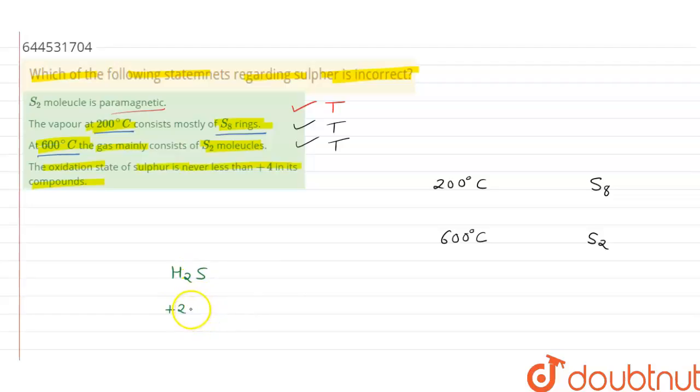plus two for hydrogen, then we assume x for S, then it equals zero. So x would be minus two. That means in the H2S molecule, the oxidation state of sulfur is minus two. Clearly, this is an example that sulfur can exist in minus two oxidation state. This makes the fourth statement false. So we can say that the fourth statement is the correct answer, as this one is the incorrect statement.